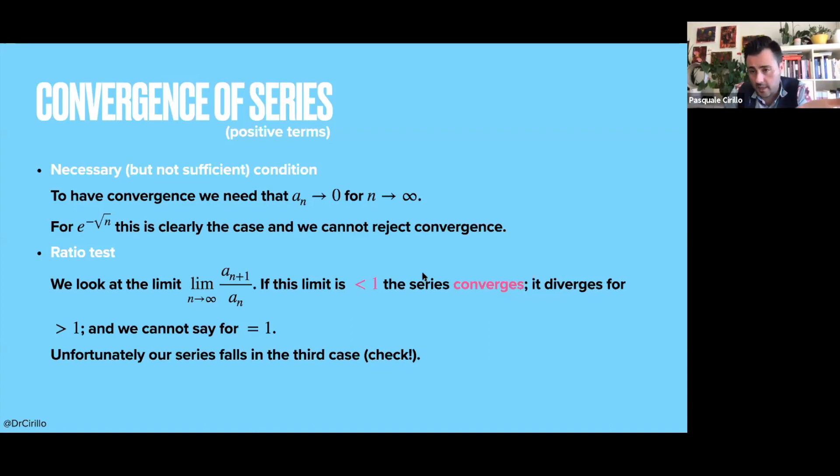So we have to find other tests. Because here we are not saying that there is no convergence. We cannot say, because if you take the limit of e to the power minus square root of n plus one, divided by e to the power minus square root of n, then this limit is one.